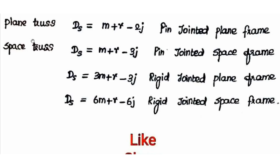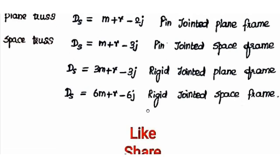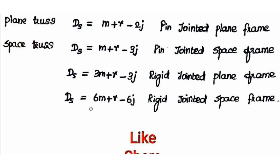For trusses and frames, the formulas involve number of members M, number of reactions R, and number of joints J. For a pin-jointed plane frame (plane truss or 2D truss): M + R − 2J. For a pin-jointed space frame (3D truss): M + R − 3J. For a rigid-jointed space frame: 6M + R − 6J.